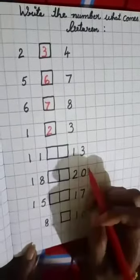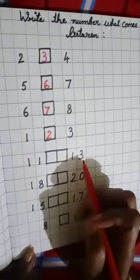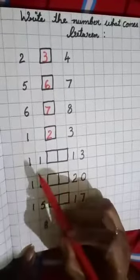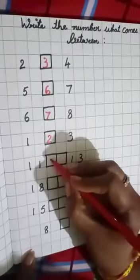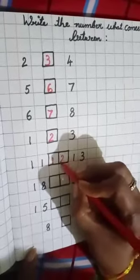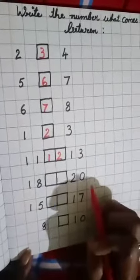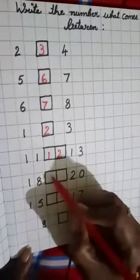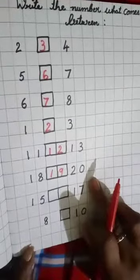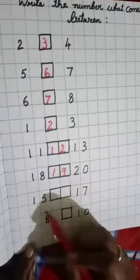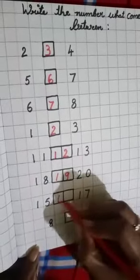Then 2-digit numbers, students. Between 11 and 13, which number will come? 11, 12 and 13 — so 12. Between 18 and 20, which number will come? 19. Between 15 and 17, which number will come? 16.